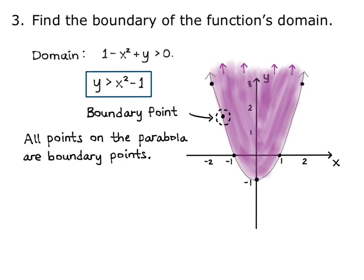Remember, a region does not have to contain its boundary, so even though our domain has strict inequality, the parabola y equals x squared minus 1 can still be the boundary. Also, notice that a boundary is always an equation with equality, even if that equality is not present in the domain. So we have the boundary of the domain is y equals x squared minus 1 with equality.